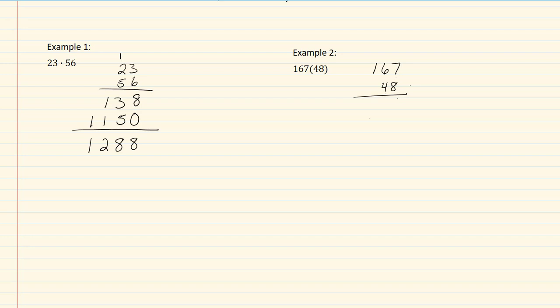So I'm now ready to multiply. 8 times 7 is 56. Write down the 6, carry my 5. 6 times 8 is 48, plus 5 would give me 53. Write down my 3, carry my 5. 8 times 1 is 8, plus 5 would give me 13.